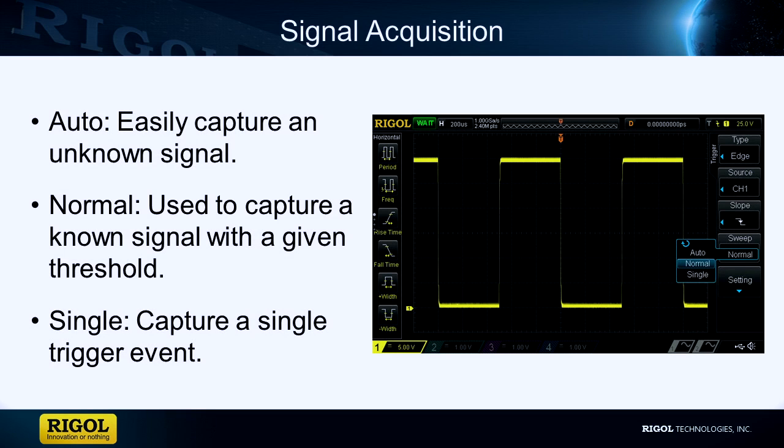Signal acquisition is a key aspect of testing a signal. There are three main methods of acquiring a signal via different triggering techniques. These include auto, normal, and single trigger.